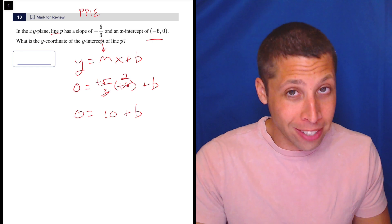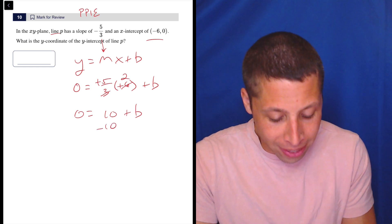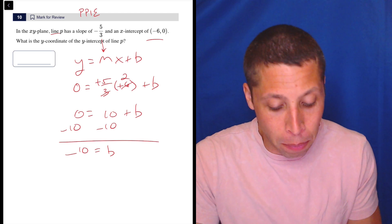But be careful here, right? 10 is not the answer. We got to subtract 10 over and now negative 10 is equal to b.